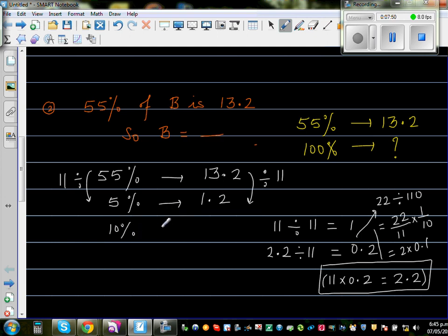And from 10% I can find 100%. So this is double, so I'm times this by 2. So you do the same thing by this by 2. And this is 100% times it by 10. So you do the same thing here. Times this by 10. So this is 24. So your B is 24.